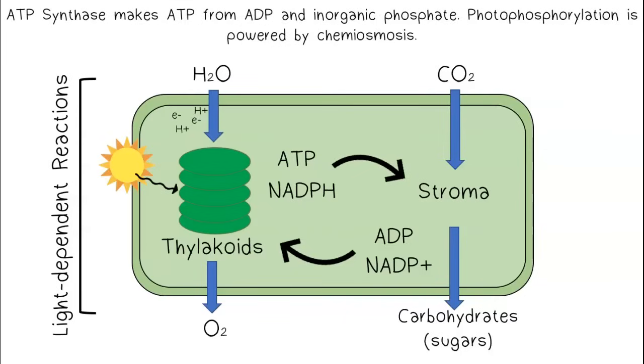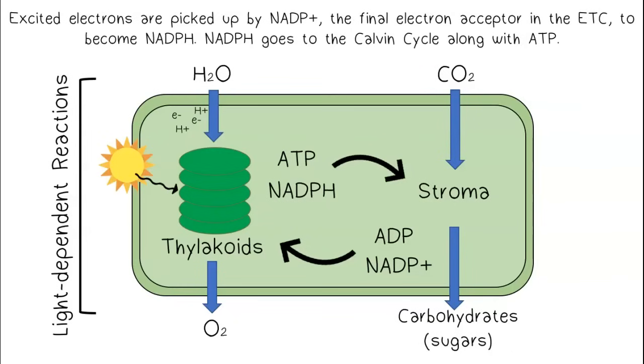ATP synthase makes ATP from ADP and inorganic phosphate. Photophosphorylation is powered by chemiosmosis. Excited electrons are picked up by NADP+, the final electron acceptor in the ETC, to become NADPH.